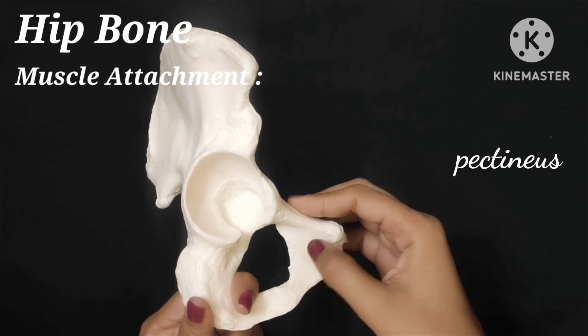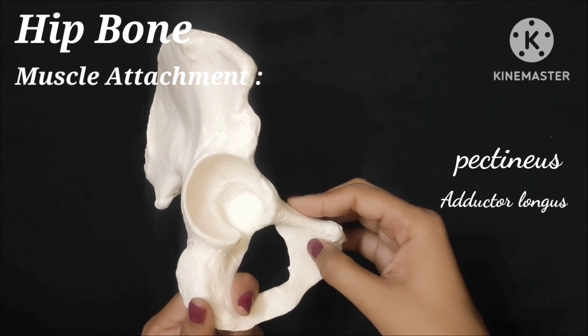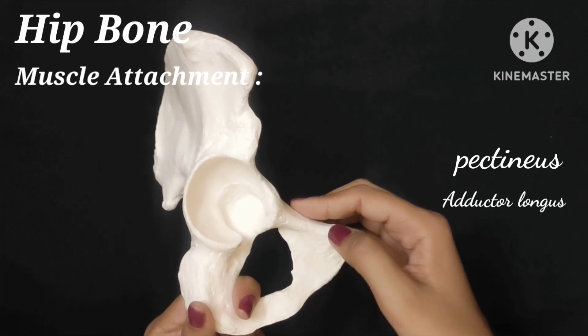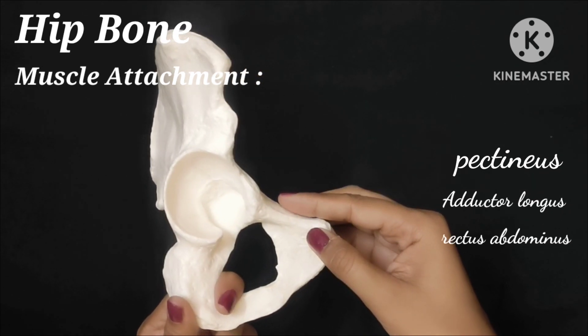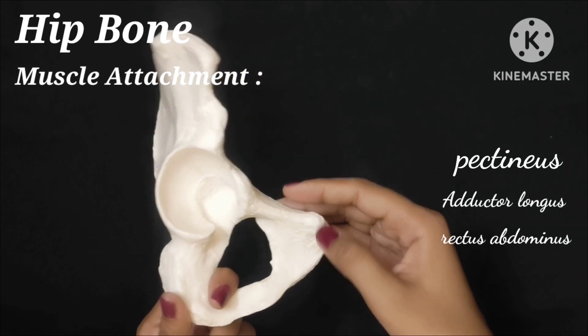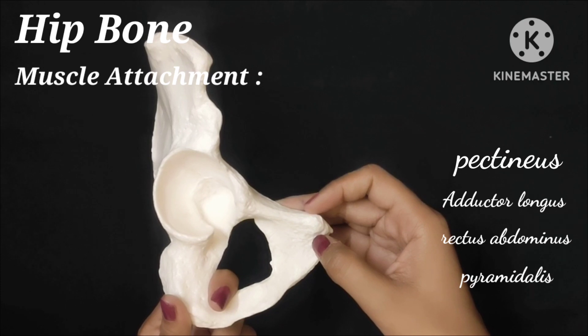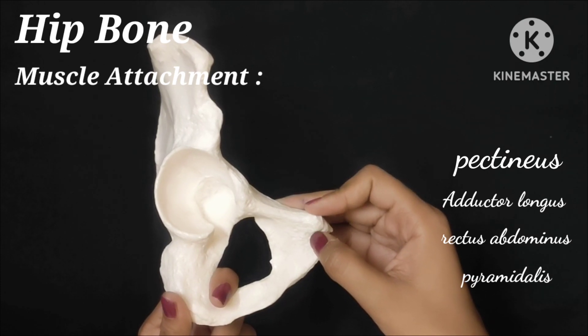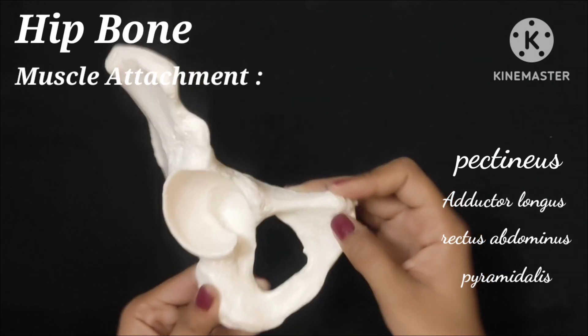From the anterior region, sartorius, adductor longus, rectus abdominis, and pyramidalis originate.